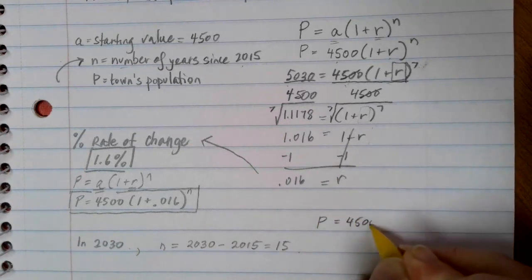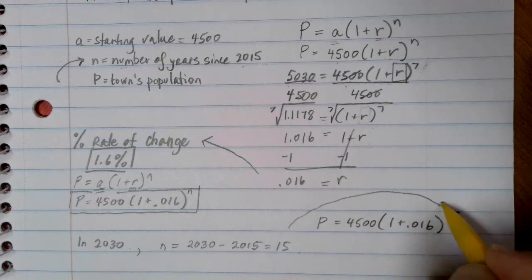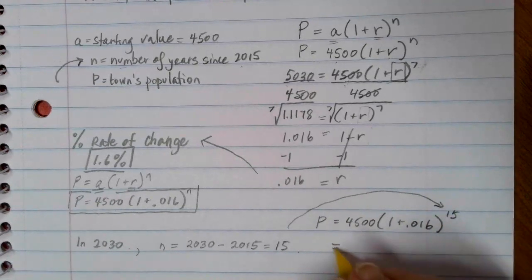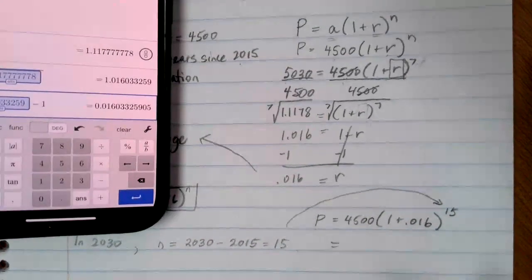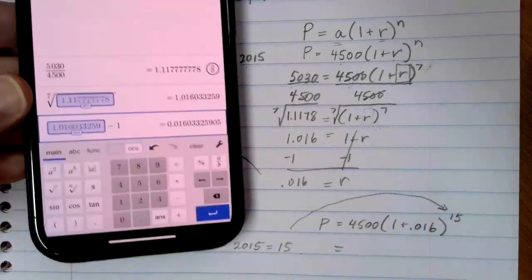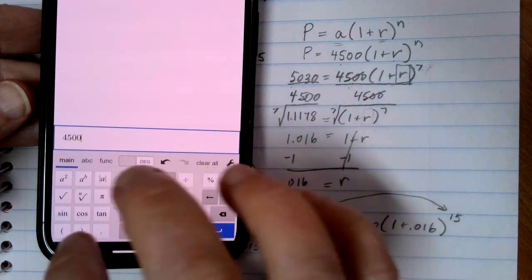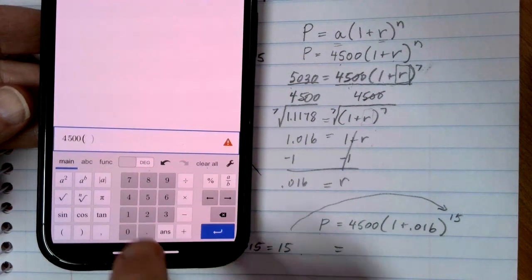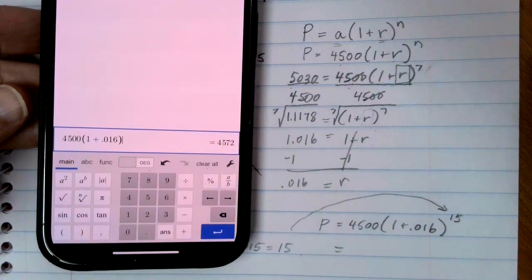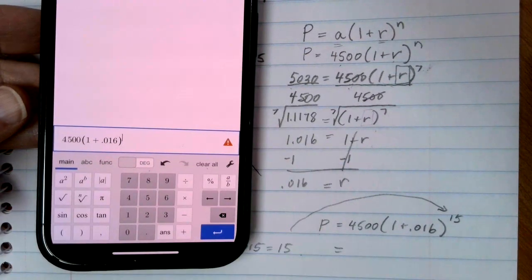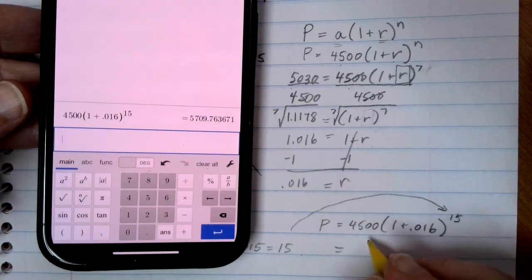So I can put N equals 15 into my equation: P equals 4,500 times 1 plus 0.016 to the 15th power. Now I have the P already by itself, so I don't have to do any solving. I can just go straight to Desmos and type that expression in my calculator. We're going to take 4,500 times 1 plus 0.016, close the parentheses, and then take that to the 15th power. We need to make sure that we hit that A to the B button so the cursor goes up into the exponent. We can hit enter and we get 5,709.7.